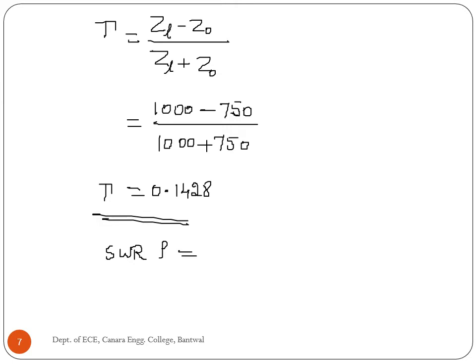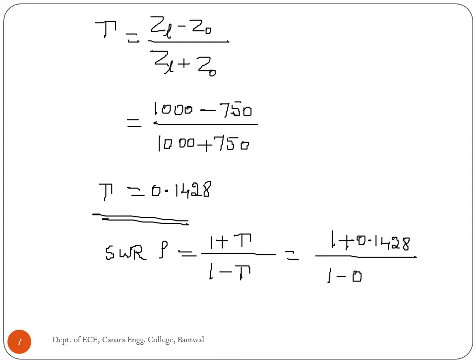Standing wave ratio equals (1 plus 0.1428) divided by (1 minus 0.1428), which equals 1.333. We have solved the second problem.